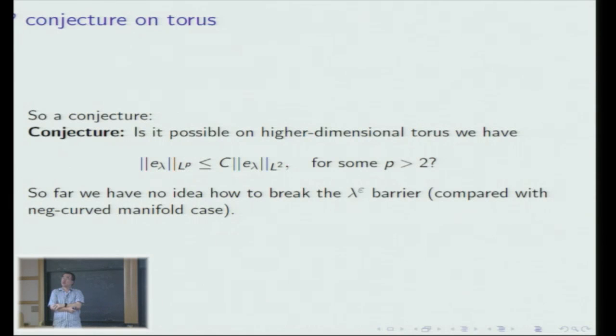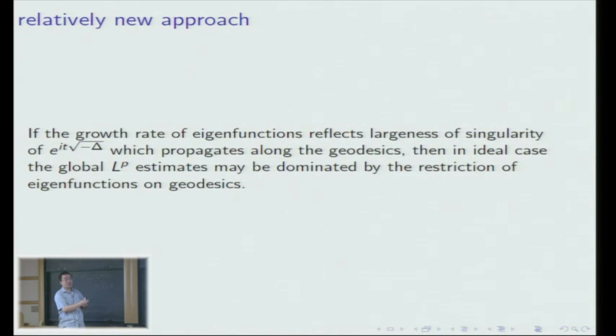Everything is pretty much stuck on generic manifolds, particularly on torus, so probably we should refresh our minds by looking at a new research direction. The general philosophy is that the growth rate or LP estimates of eigenfunctions reflects the largeness of the half-wave operator, and we know its singularities propagate along geodesics with high concentration on periodic geodesics. It is therefore natural to think that the global LP estimates can be controlled by the restriction of eigenfunctions over such geodesic lines.